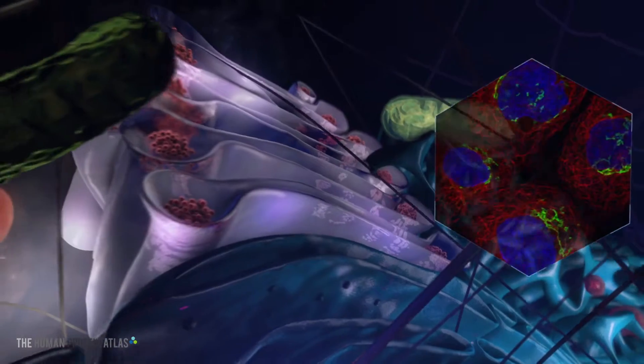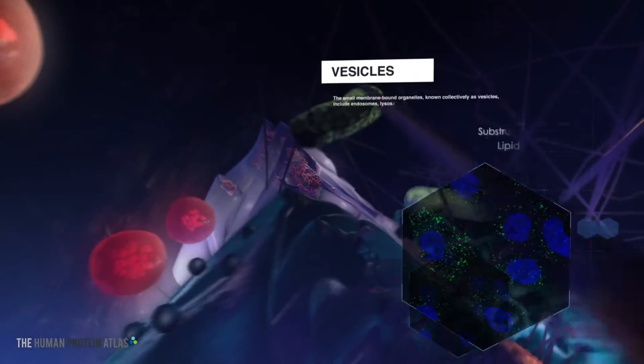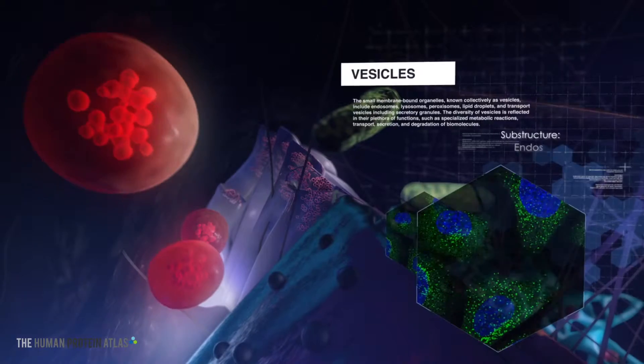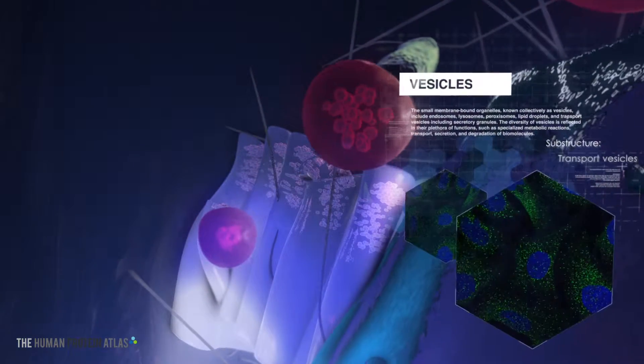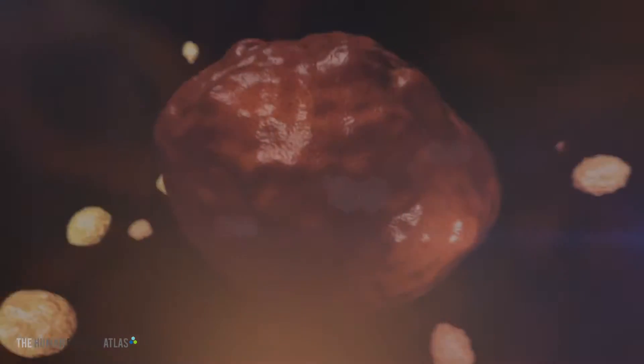Proteins in the cell are transported in vesicles. There is a multitude of different vesicles in the cell, all with different functions. These functions range from transport to degradation to secretion of biomolecules.